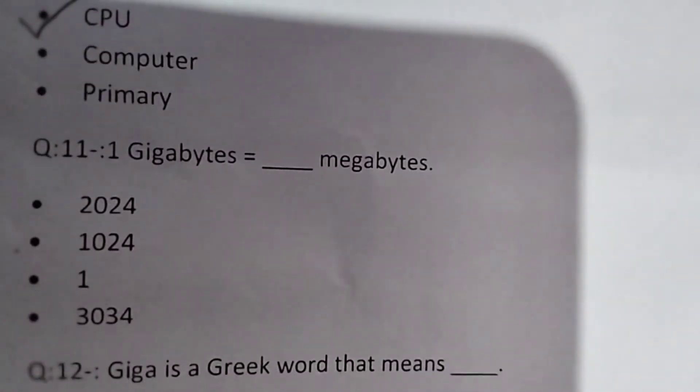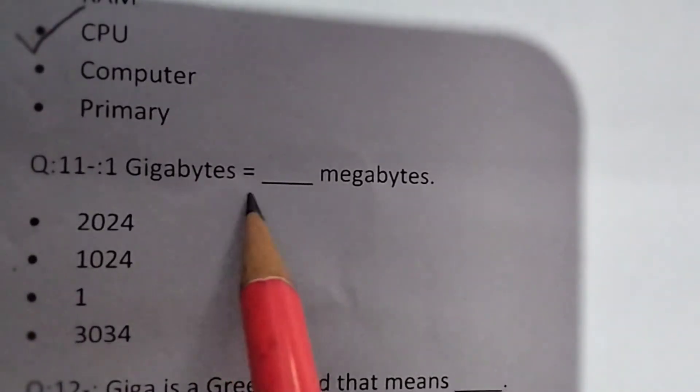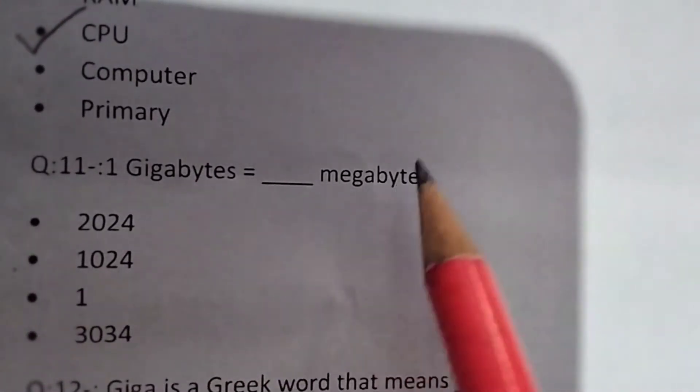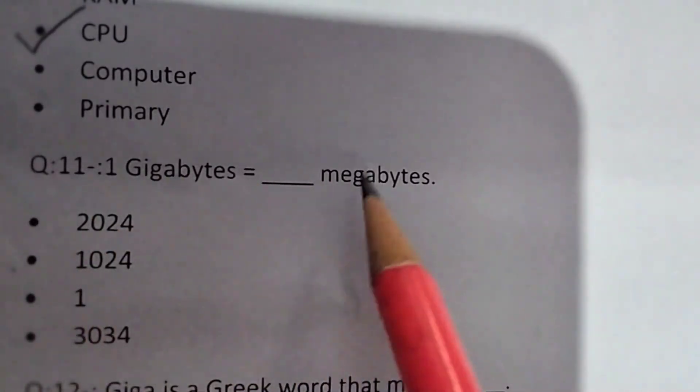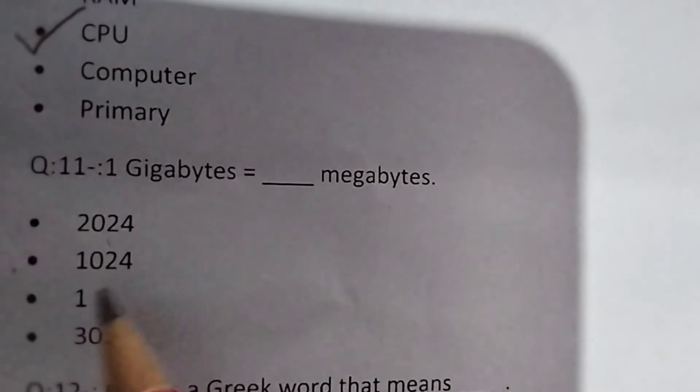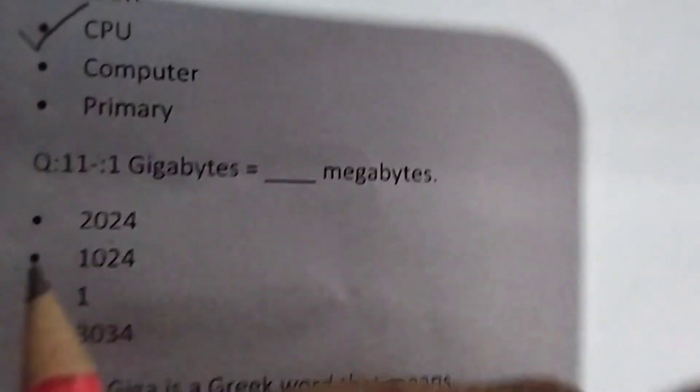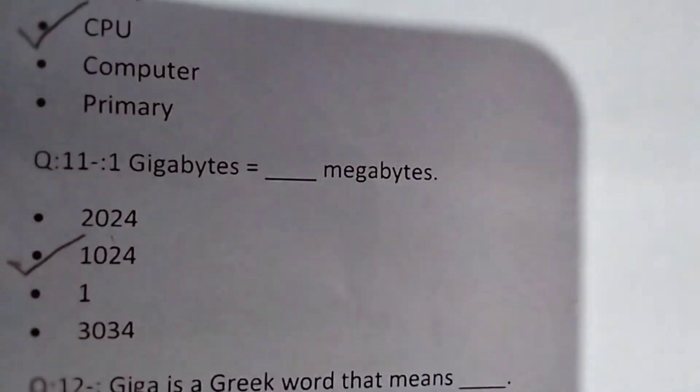Next question: One gigabyte is equal to blank megabyte. One gigabyte is equal to how many megabytes? 2024, 1024, 1 or 3034? The answer is 1024.